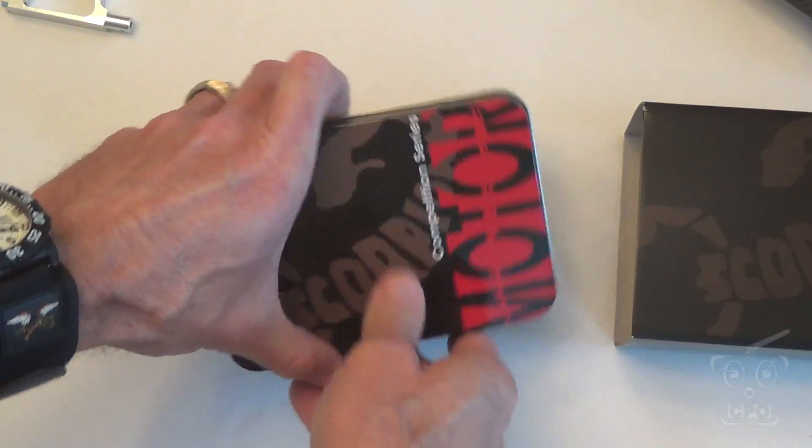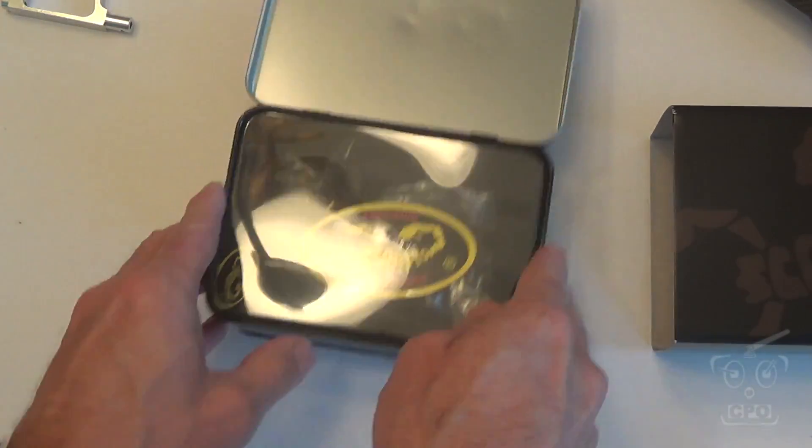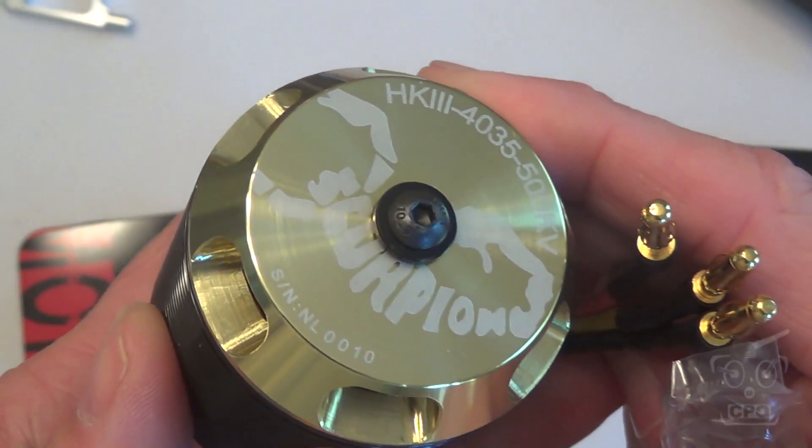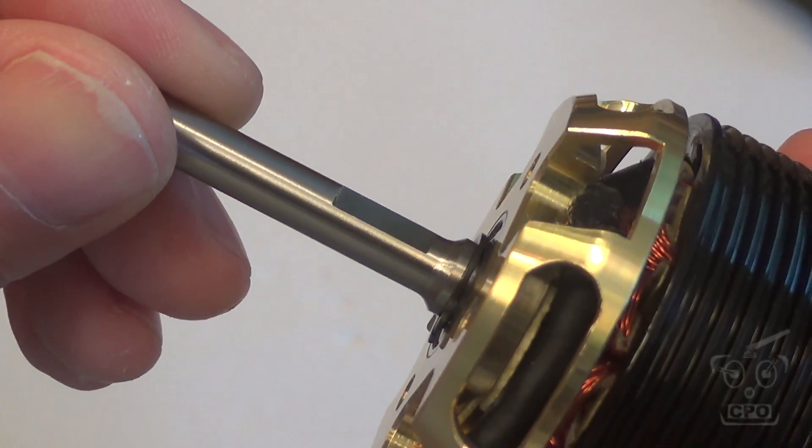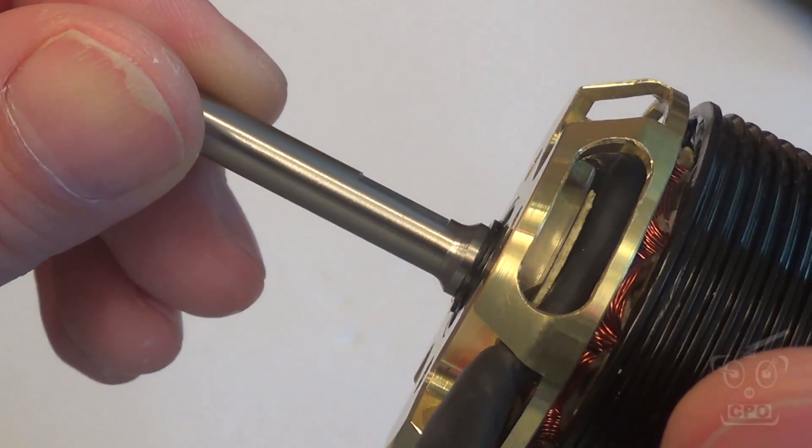Hey there, CPO here, and we're on part two of the frame assembly for the Raptor 700, which includes a lot more than just the frame. Pages 10 through 14 is what we're getting through.